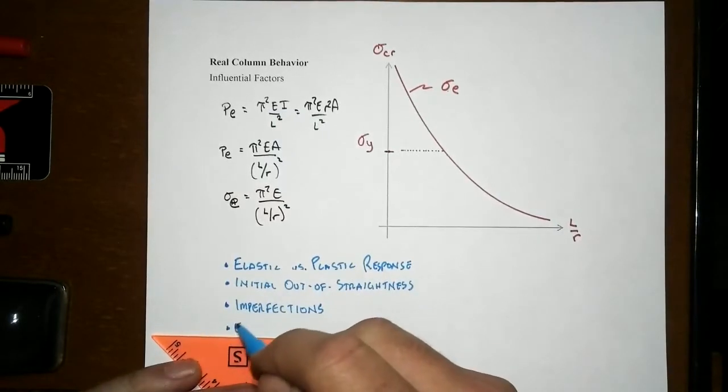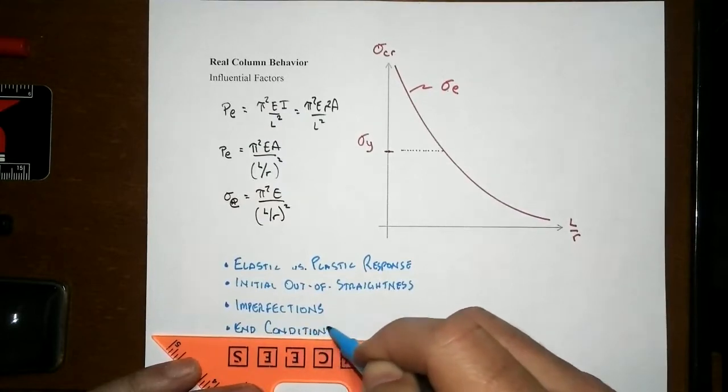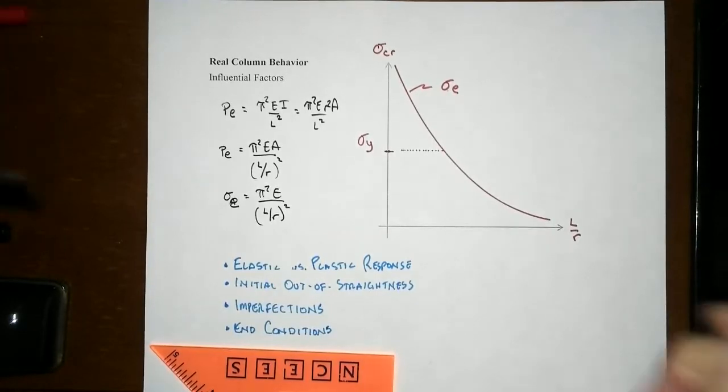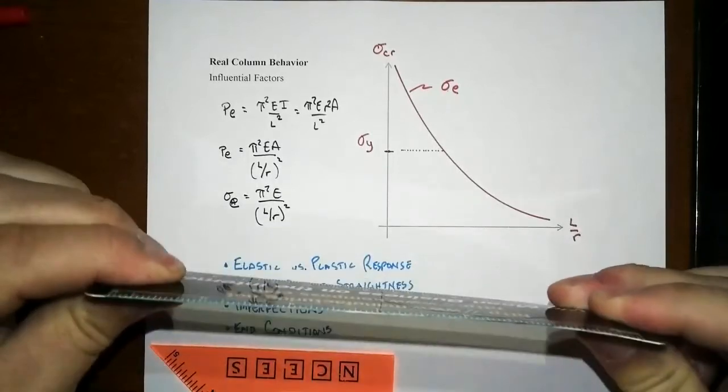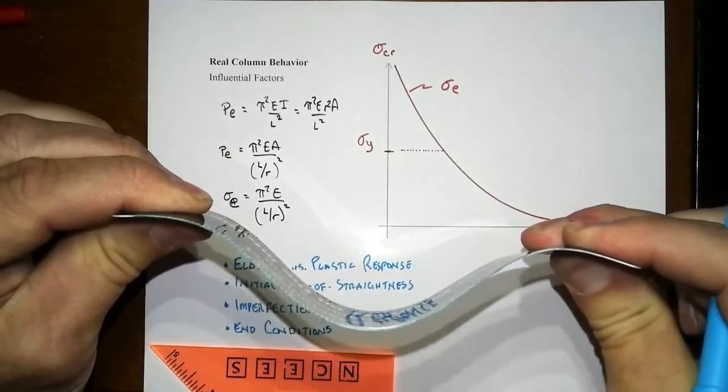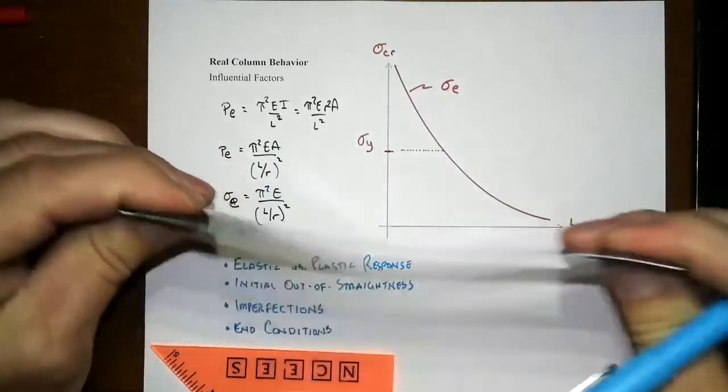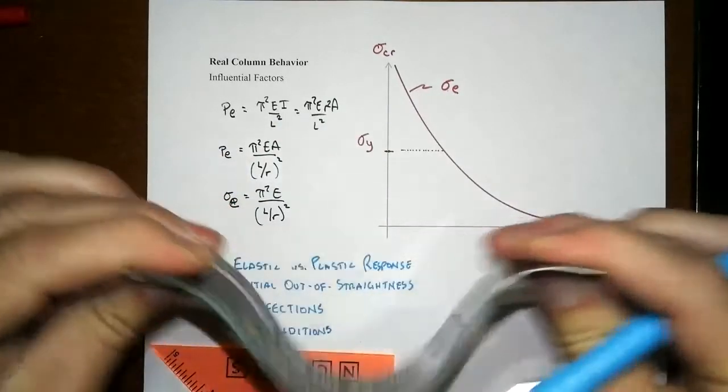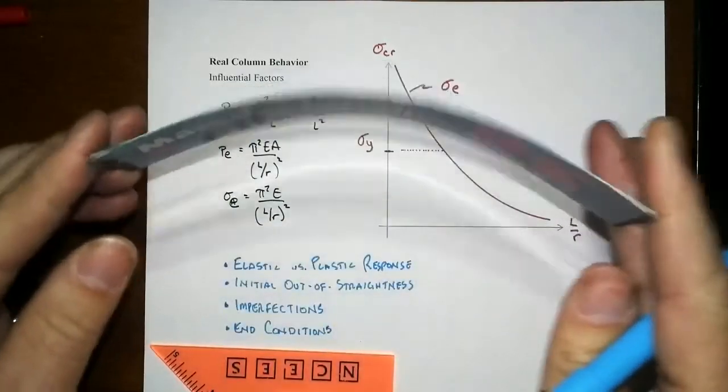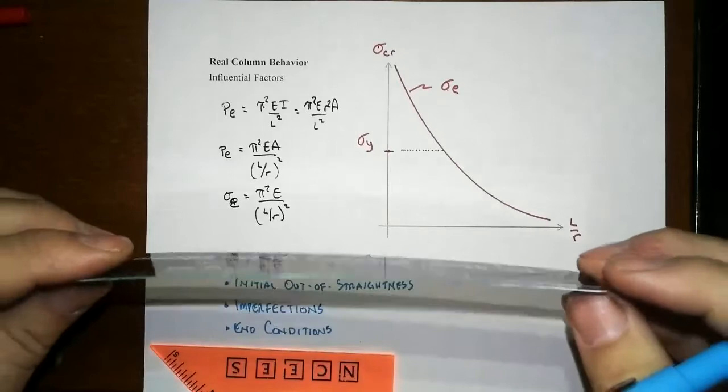The end conditions are going to influence things significantly. Our model so far has been pin-pinned on either end, but what if we clamp it? If we clamp it fixed-fixed and squeeze it, notice that deflected shape is significantly different. That's not a half sine wave anymore. There's a different snapping that happens. The degree of friction in that pin at the end will slightly change things.